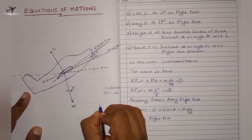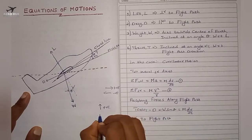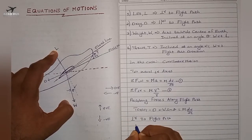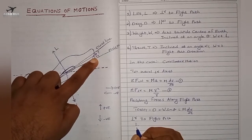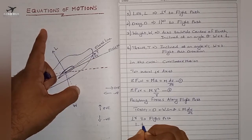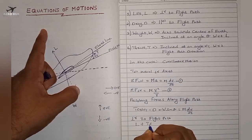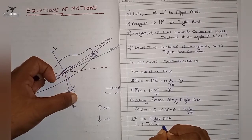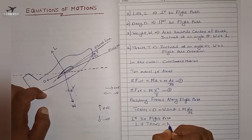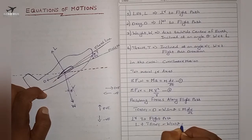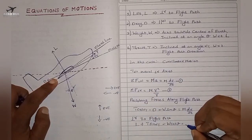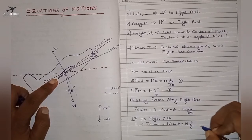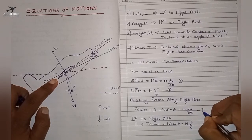Resolving forces perpendicular to the flight path, upward forces are positive and downward forces are negative. We have lift acting upward (positive), plus the thrust component T sin(αt) in the vertical direction, minus the weight component W cos(θ) acting downward. This equals mv²/r, the centrifugal force, where r is the radius. This is equation number four.